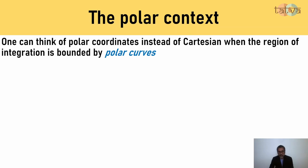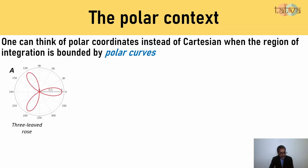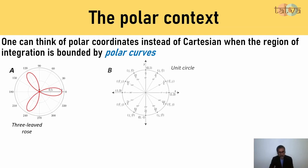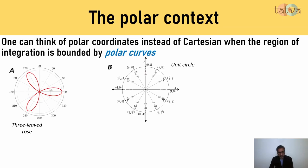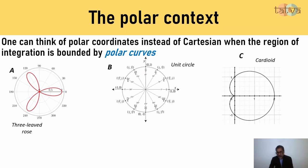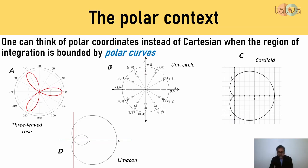So let us look at the polar context. One can think of polar coordinates instead of Cartesian coordinates whenever the region of integration is bounded by polar curves. We need to understand clearly the difference between a Cartesian system of curves and a polar system of curves. Now this is the very famous three-leafed rose, and you can see that it is an unheard of case in the Cartesian system. Then of course the circle is a classic polar curve. And then we have what are known as cardioids, the very famous polar curve. Then we have a limacon, which is very close to a cardioid. And then we have Bernoulli's lemniscate, which is also another famous polar curve.